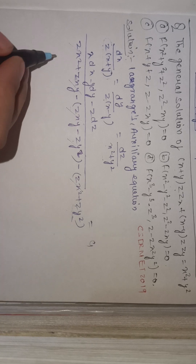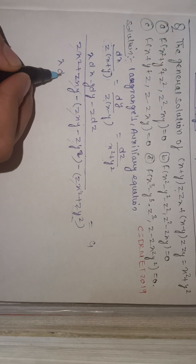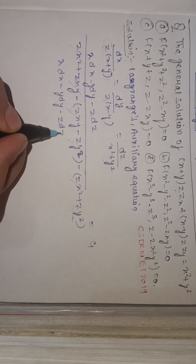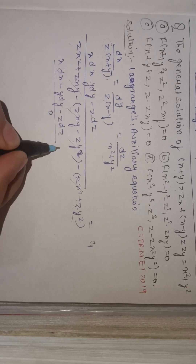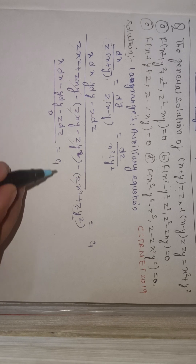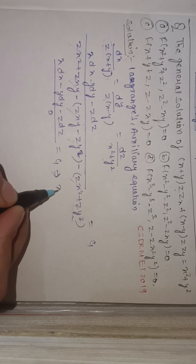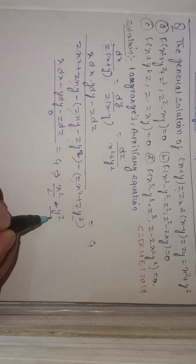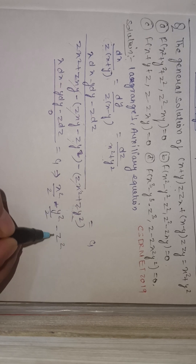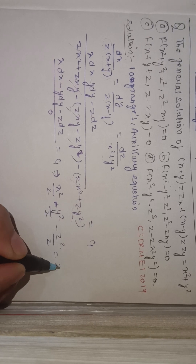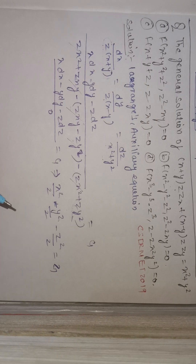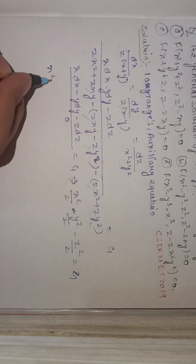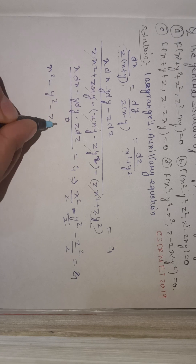Since the denominator becomes zero, it equals c1. So we get: (x dx - y dy - z dz) / 0 = c1. Integrating, the solution is x²/2 - y²/2 - z²/2 = c1.